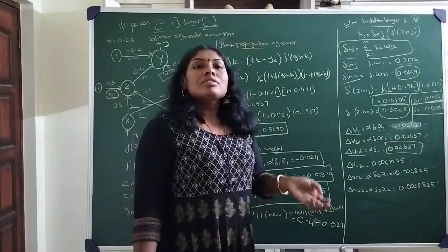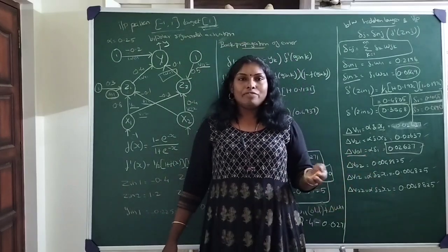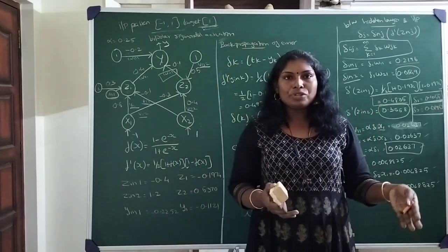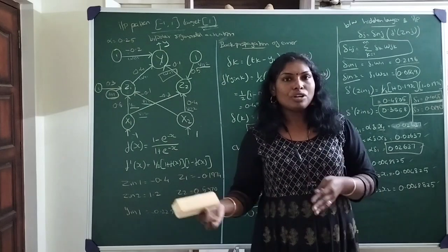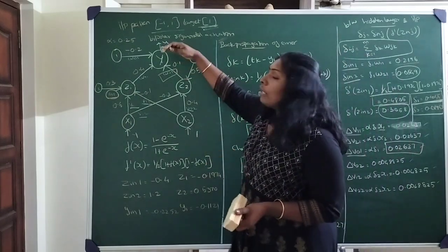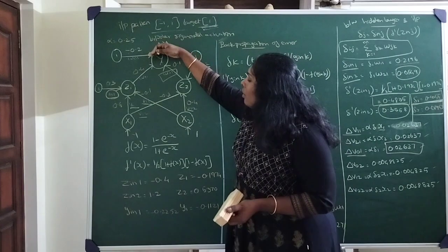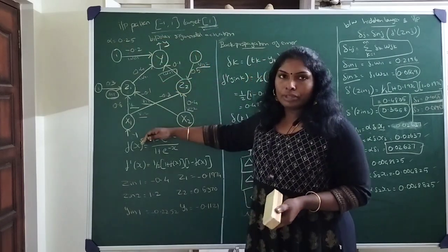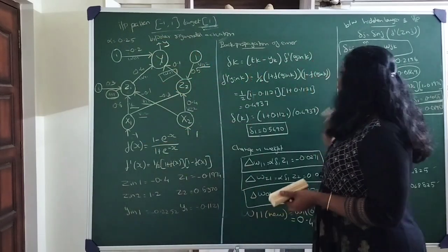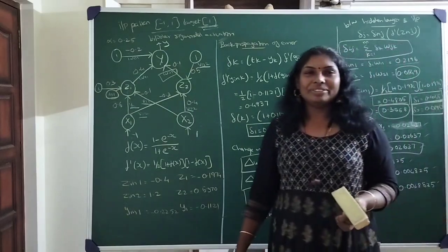This is how a backpropagation network works: feed forward of input, calculation of the error function, back propagation of the error from output layer to hidden layer to input layer, and finally the weight updation. Thank you.